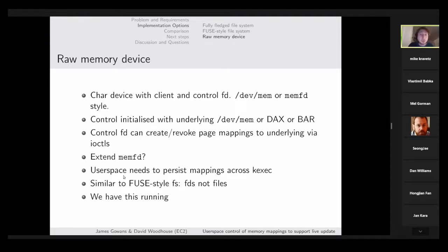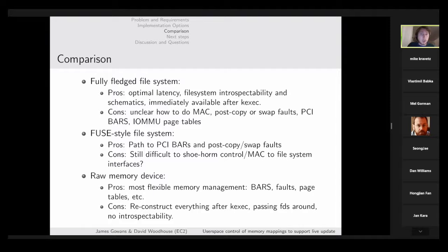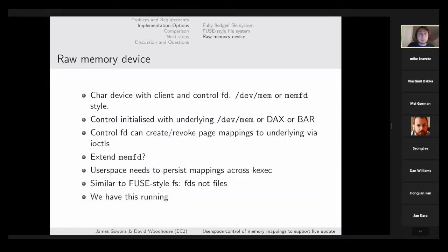User space would need to persist mappings across kexec so it could re-inject the same mappings after the kexec when those FDs start getting accessed again. We have actually built and run something using this interface, but it is very tailored to our one particular use case and it is a bit clumsy passing file descriptors around. So we're exploring other options for how to build something upstream to support this live update use case.